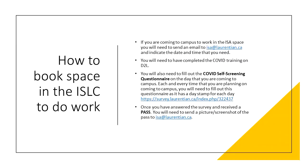If you're coming in for a booked in-person appointment, it gives us an indication that we can meet you at the center. If you'd like to use space at the ISA to work, you have to send us an email at isa@laurentian.ca and indicate the date and time you'll require. You'll also need to complete the COVID training on D2L and fill out a COVID self-screening questionnaire on the day you're coming to campus. Each time you plan to come to campus you must fill out this questionnaire, as there is a date stamp for each day. You answer three questions and once you receive a pass, send a picture or screenshot of the pass to isa@laurentian.ca.